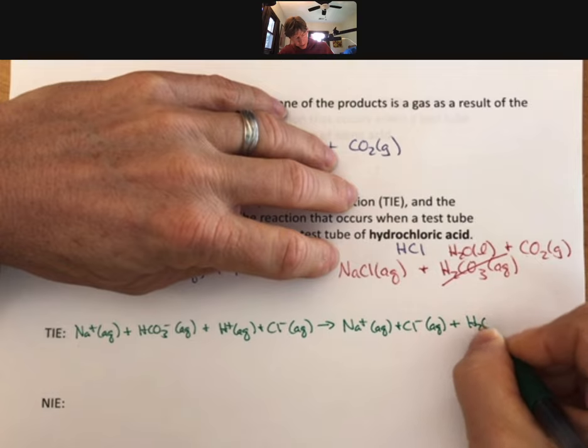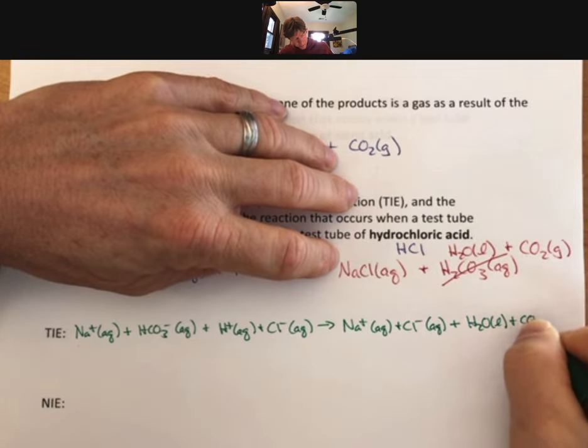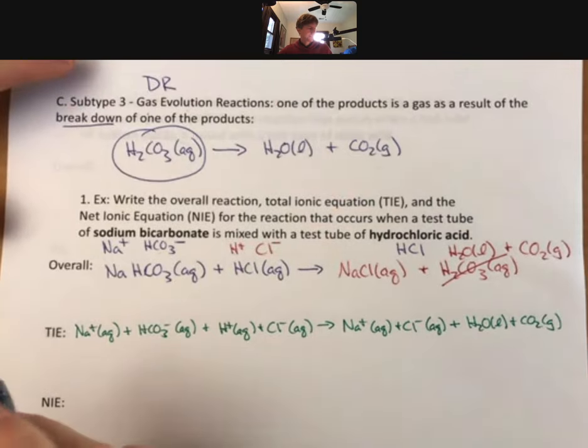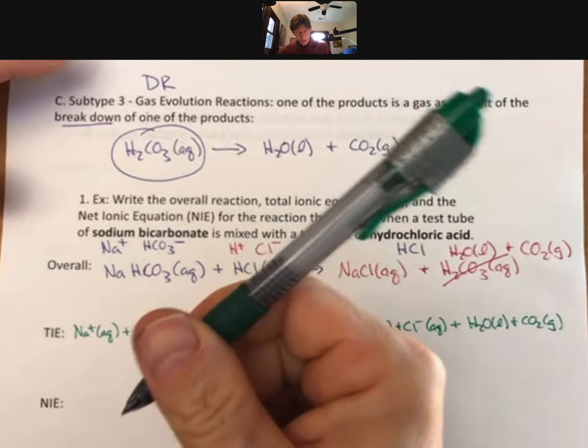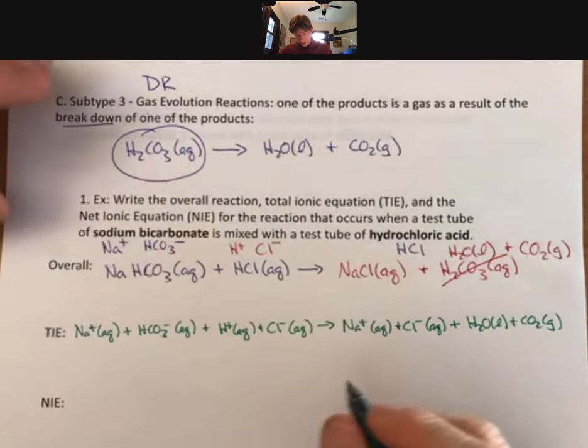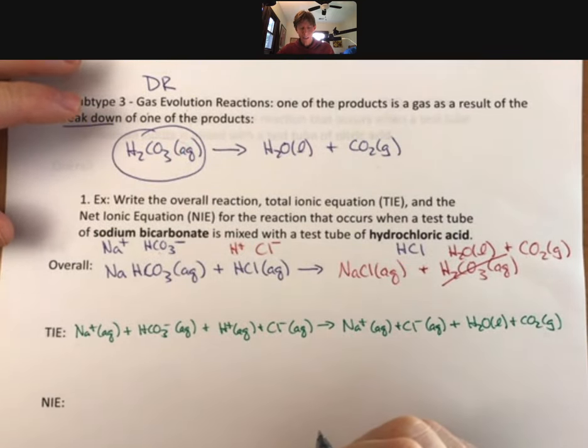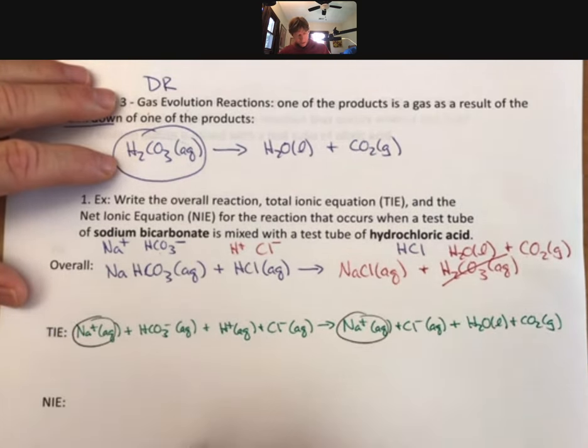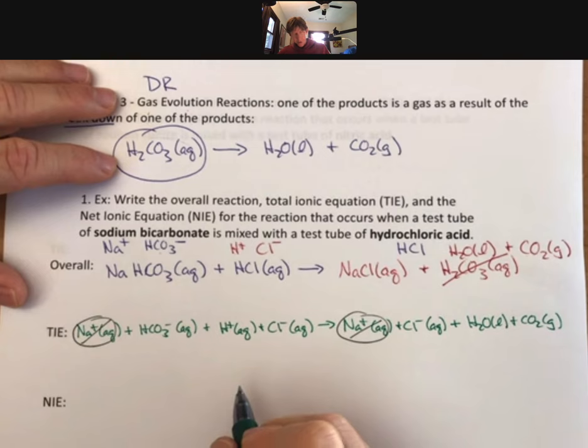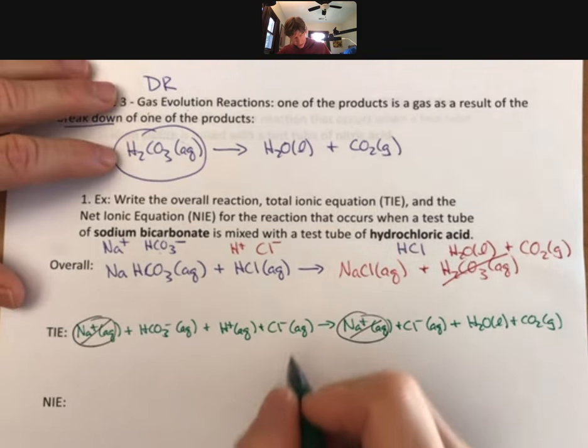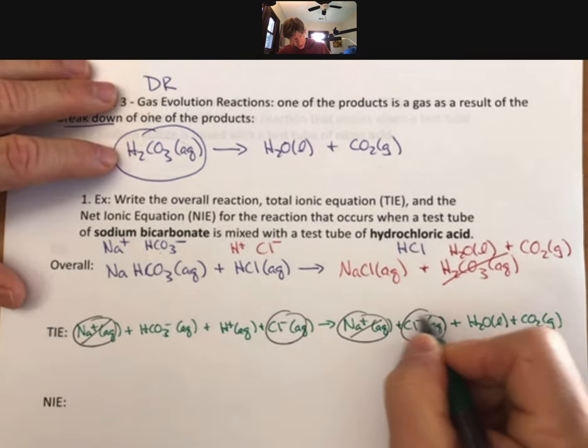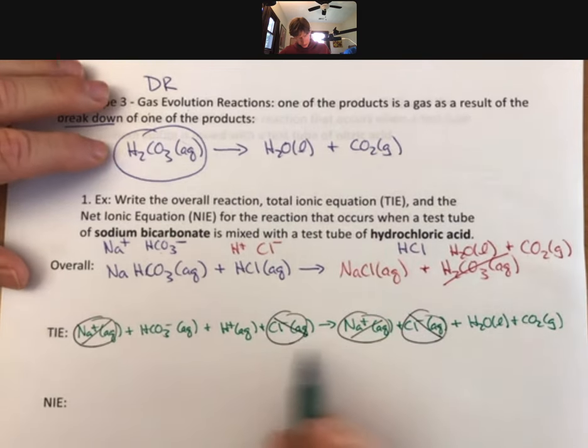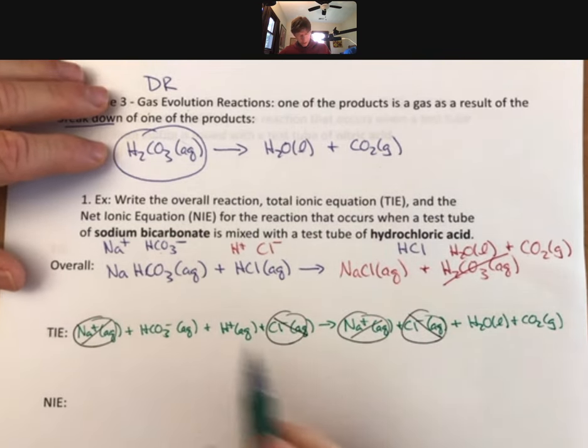And solids, liquids, and gases stay together. All right. It's a green pen, but it actually writes black. That's what the duct tape means. Let's look for spectator ions. Sodium, sodium. Awful lot of sodium ions getting crossed out here. Chloride, chloride. Gets crossed out as well. Nothing else here.